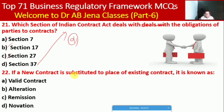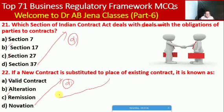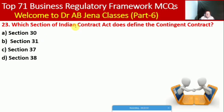Next MCQ: if a new contract is substituted in place of an existing contract, what is it called? Whether valid contract, alteration, remission, or novation. Here D is the right option — such a contract is called novation. Next MCQ: which section of the Indian Contract Act defines the contingent contract? Whether Section 30, 31, 37, or 38. Here B is the right option — Section 31 of the Indian Contract Act defines the contingent contract.